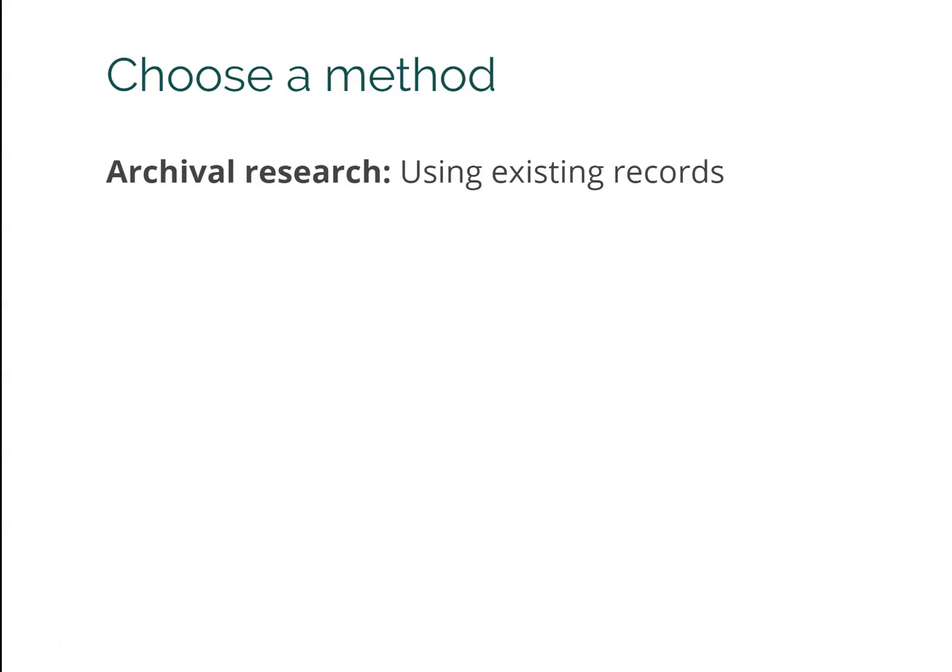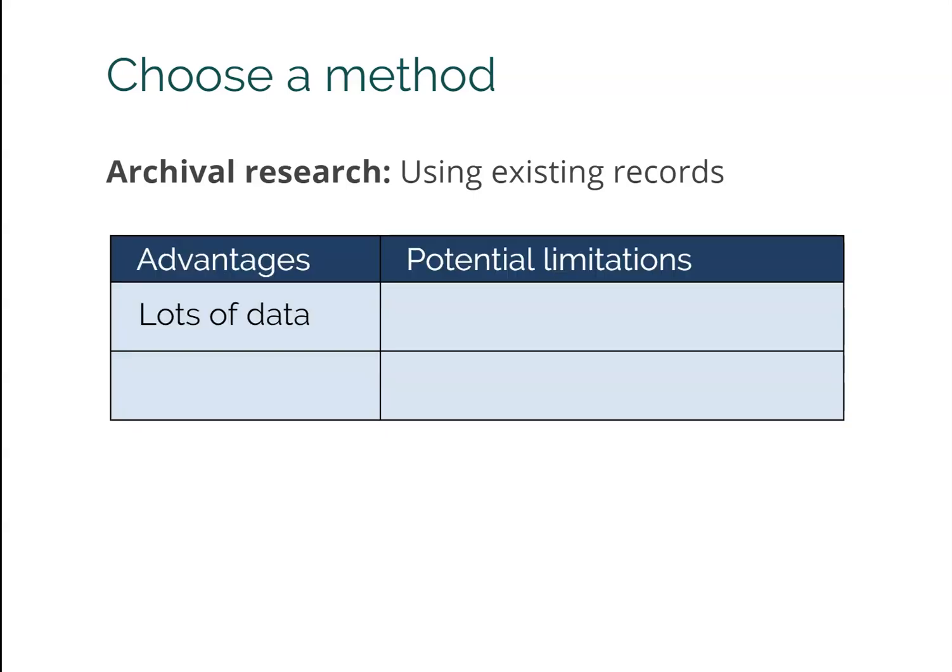Next is archival research — using existing records. Colleges do this all the time; we have all sorts of data on students: when did you first enroll, what were your test scores coming in, what was your high school GPA, and so on. The advantage is we have lots of data, and it's fairly inexpensive because the data is already there — all it's really costing is your time and energy to interpret it.